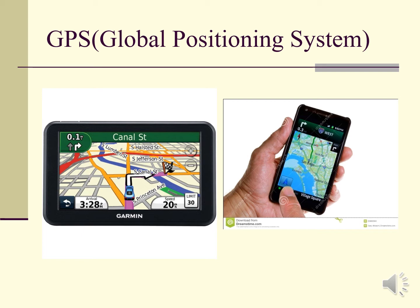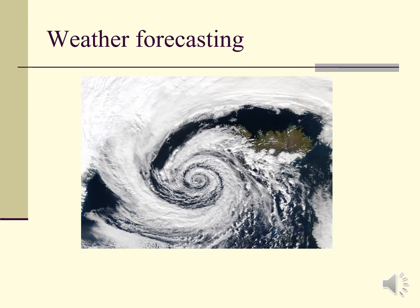GPS — Global Positioning System. Before going anywhere by transport we have to know the road. But it is very amazing that nowadays one does not need to know the road before going anywhere. By analyzing signals transmitted through satellites moving around the Earth, one can easily locate where one is, and by inserting a map one can go anywhere one likes.